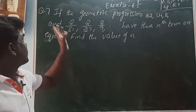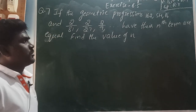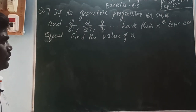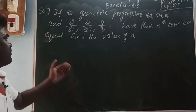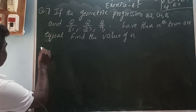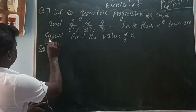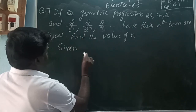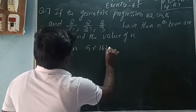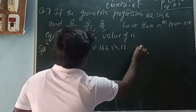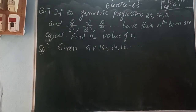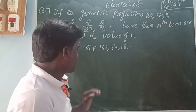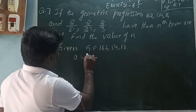Next, question number 7: In the geometric progressions 162, 54, 18 and so on, and 2 by 81, 2 by 27, 2 by 9 and so on — how their nth terms are equal? Find the value of n. Given the first GP: 162, 54, 18 and so on. First term a is equal to 162.